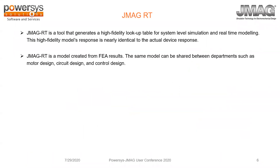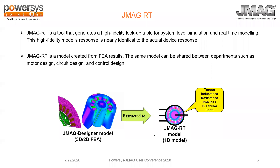How do we generate these lookup tables? JMAG has a tool chain called JMAG-RT. JMAG-RT is a tool that generates a high-fidelity lookup table for system-level simulations and real-time modeling. When I say high fidelity, it means it is more identical to the actual device response. JMAG-RT is a model created from FEA results, which means the same model can be used and shared between departments such as motor design, circuit design, and control design. Information like torque, inductance, resistance, and iron loss are available in a tabular format — a 1D model extracted from either a 2D or 3D FEA model.